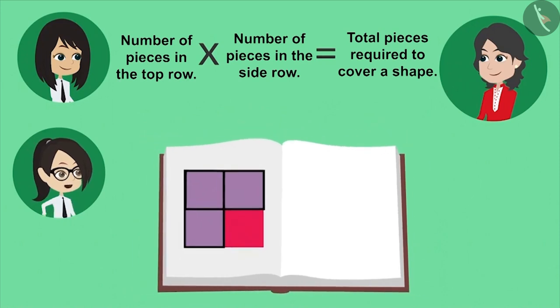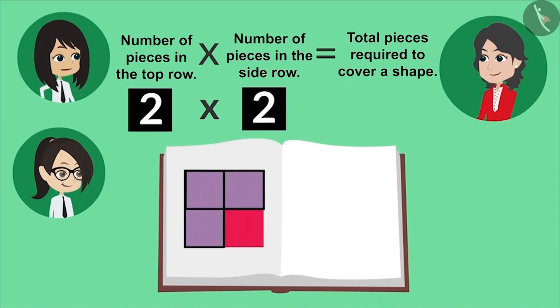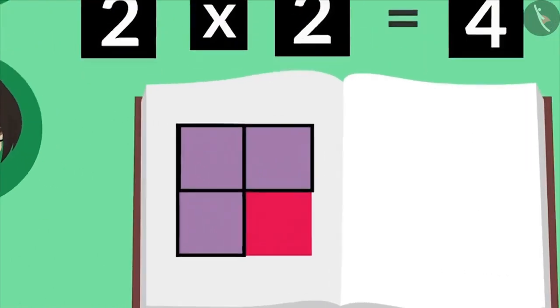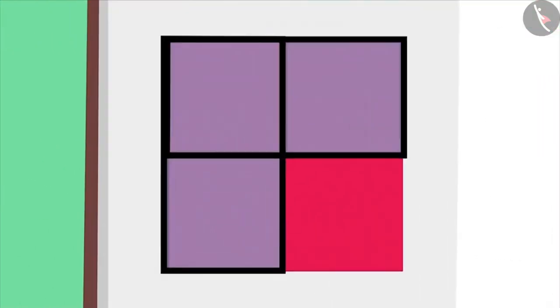That means, to know how many pieces will be required to cover this shape, we have to multiply two by two. Am I right? Yes. Multiplying two by two will give us four. That means, four pieces are required to cover this shape.